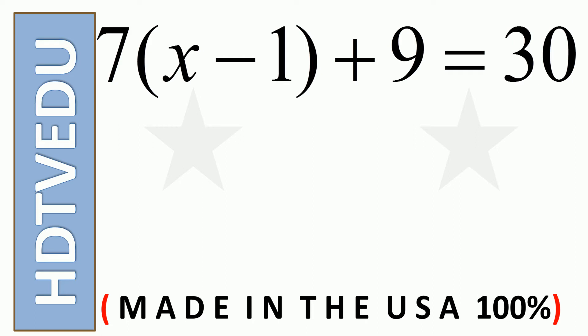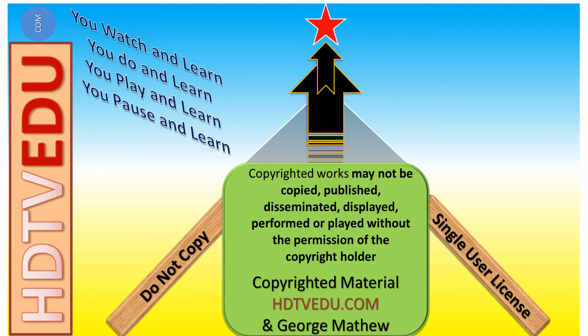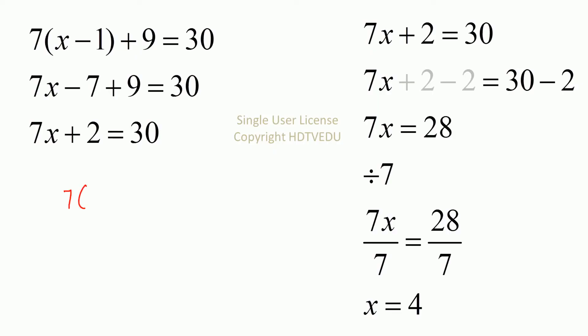7 times x minus 1 plus 9 is equal to 30. Solve for x. Use the distributive property and what do we get? 7x minus 7 plus 9 is equal to 30.